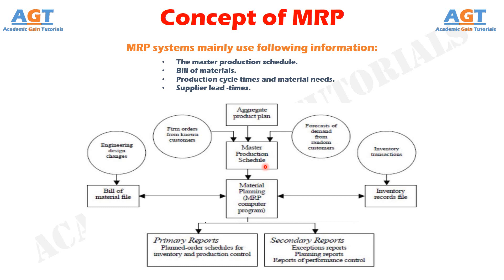The bill of materials gives information about the product structure, that is, the parts and raw material units necessary to manufacture one unit of the product of interest.